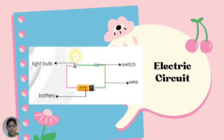Look at the illustrations carefully. The picture shows an electrical circuit which has four parts: a source, a light bulb, wires, and a switch.